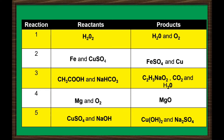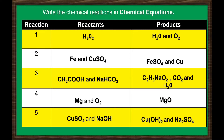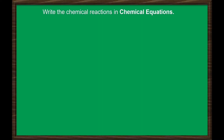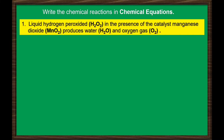In chemical reactions, it can be written in chemical equations using some symbols. Since the reactants and products are written in chemical formula, we can write the chemical reactions in chemical equations. Let's have another activity: write the chemical reactions in chemical equations. You may pause this video as you write your answer. Using the formulas and symbols, here are the chemical equations of the five chemical reactions.